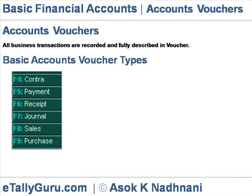In Tally, we use the following voucher types using buttons for each voucher type. F4 Contra: for money transfer, that is cash withdrawal and cash deposit between two cash or bank accounts. F5 Payment: money payment in cash, check, or bank debit — that is outflow of cash.